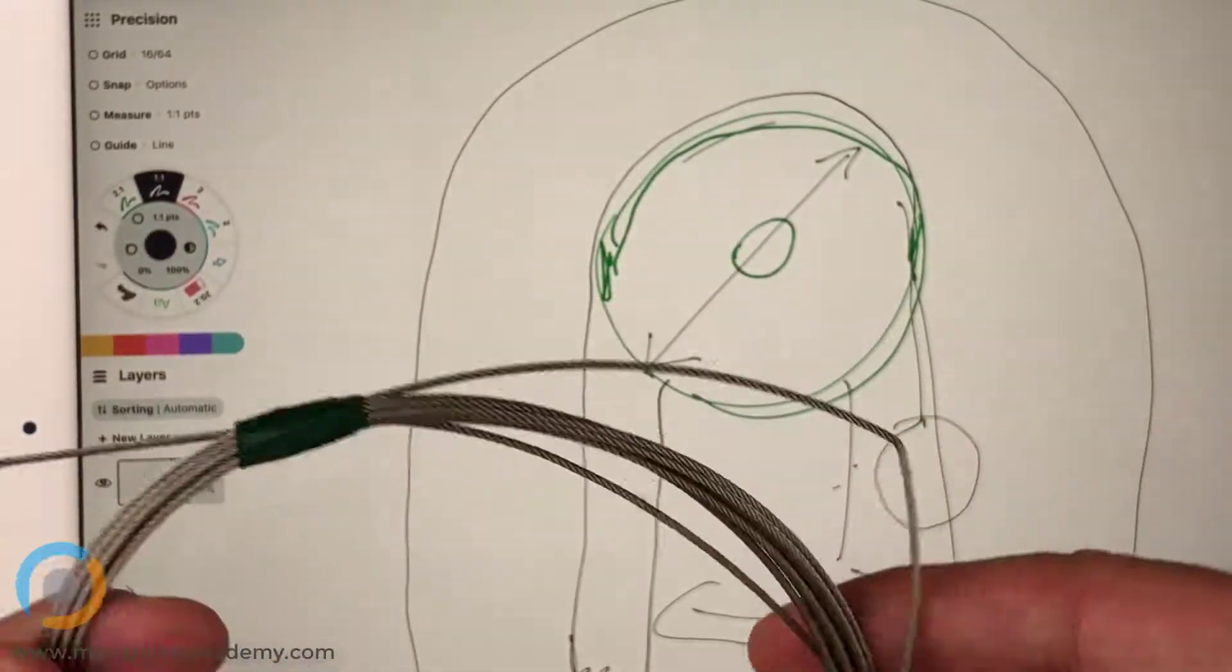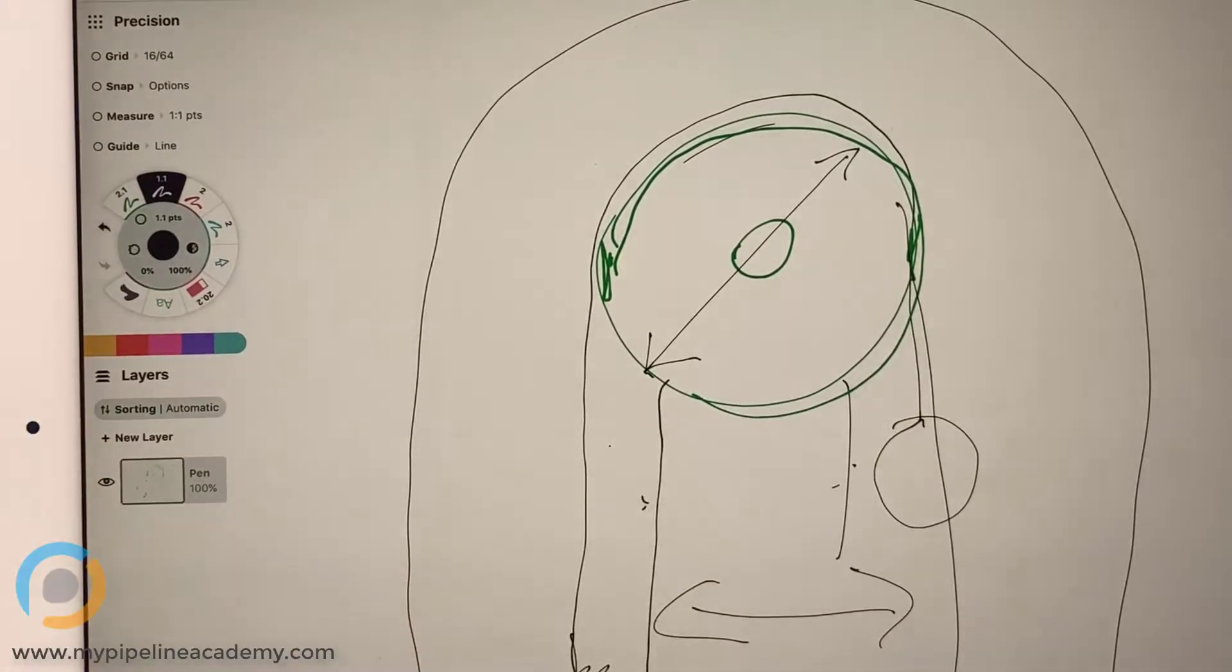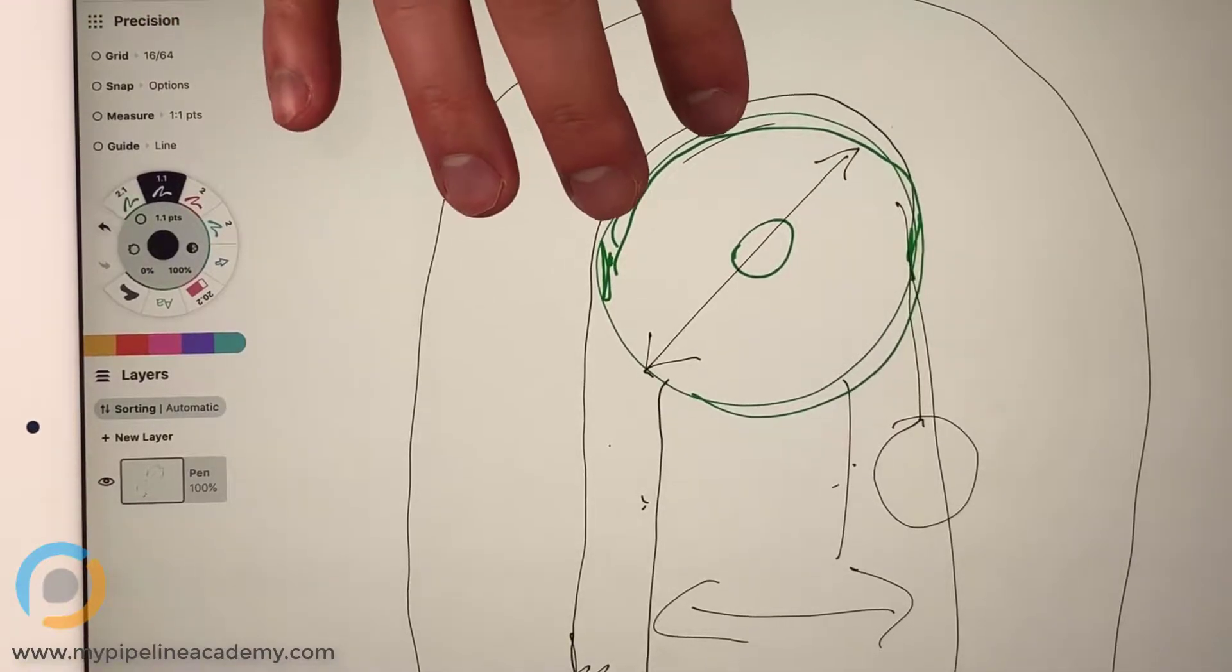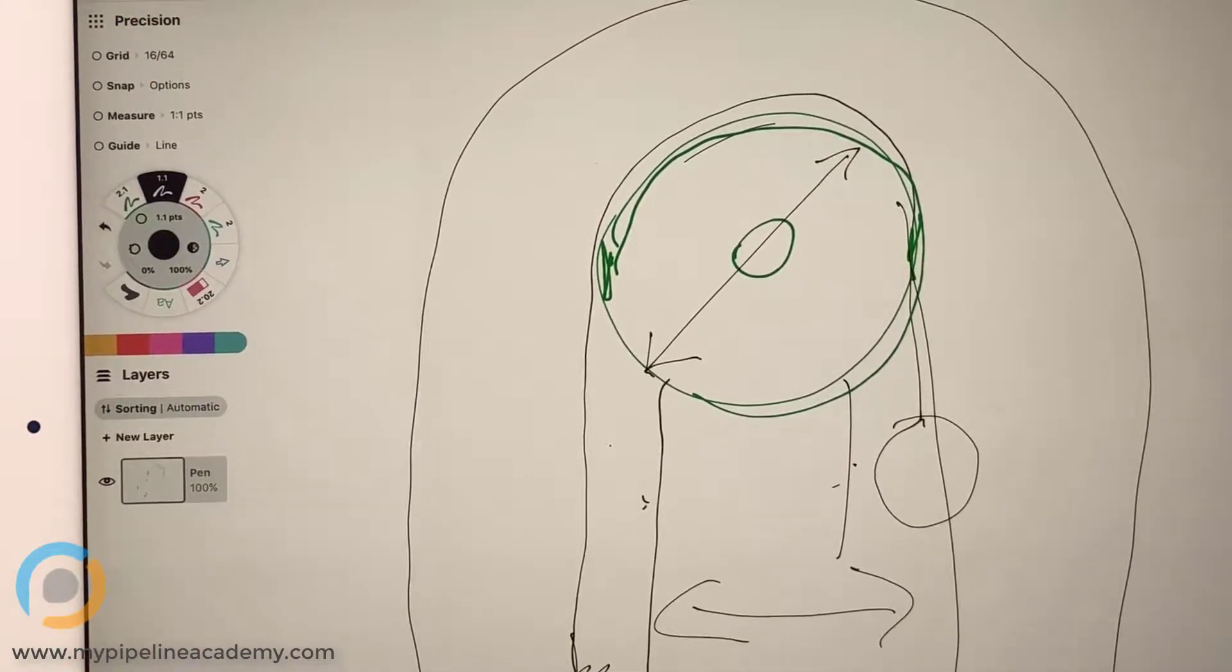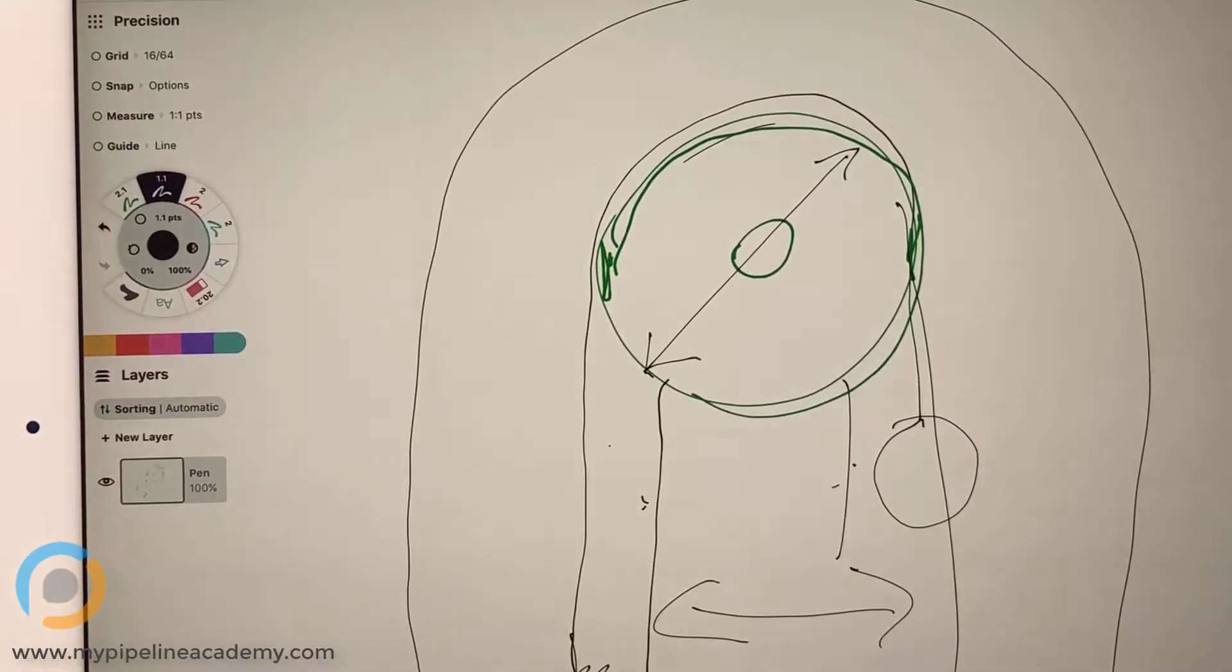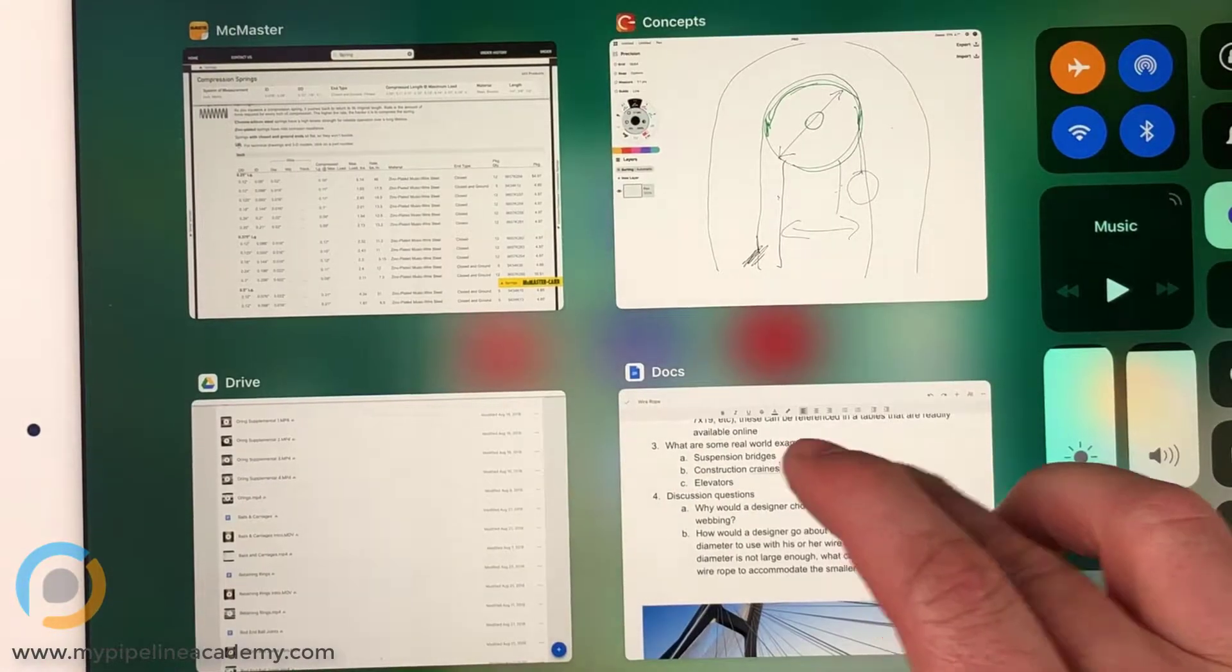Yeah. So, essentially, when you're buying the rope, make sure you look for that radius. What is it called again? The bend radius. And make sure that the pulley is smaller or bigger than the radius. Yeah. You're right. Yeah. Okay. So, what if, what was the second part of that question?